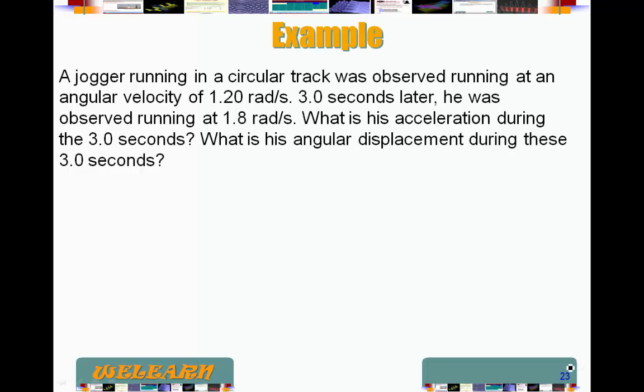Let's work this example. In this case, we have a jogger running in a circular track. He or she was observed running at an angular velocity, which is a very strange unit for people running in tracks, but anyway, 1.20 radians per second. Three seconds later, he was observed running at a lower angular velocity, 1.8 radians per second.